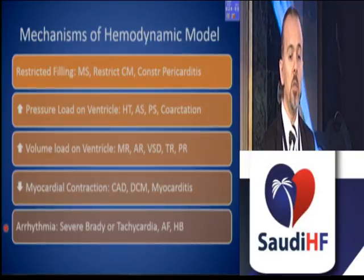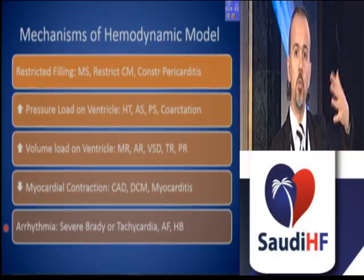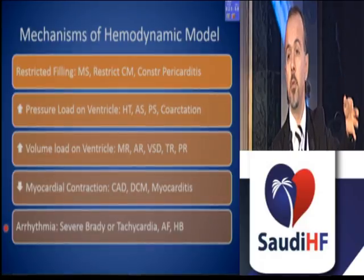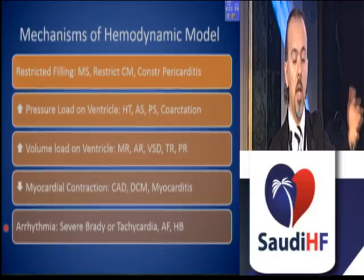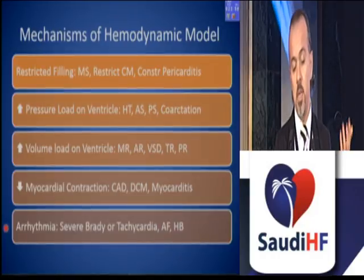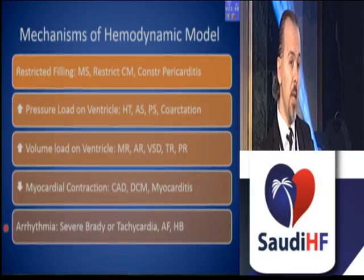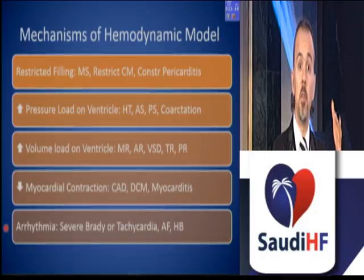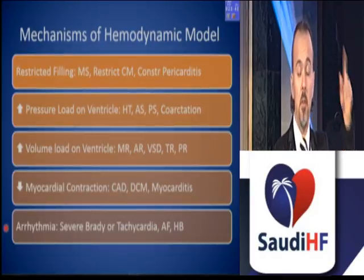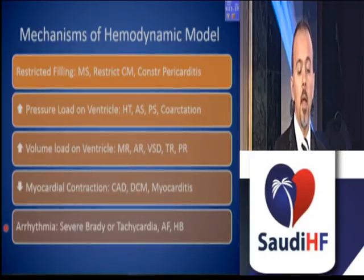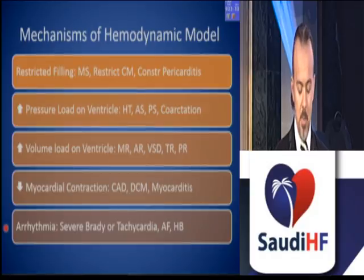The mechanisms of the hemodynamic model include several diseases: restricted filling and increased pressure load on the ventricle — from hypertension and aortic stenosis; increased volume load on the ventricle, mainly from mitral regurgitation, which may be secondary or primary; decreased myocardial contraction mainly driven by coronary artery disease, the main cause of HFrEF; and of course diabetes is very prevalent. Arrhythmia can also contribute to the hemodynamic model as a mechanistic pathway.